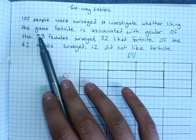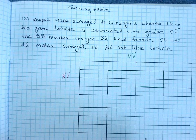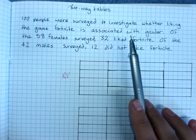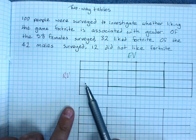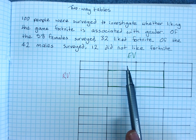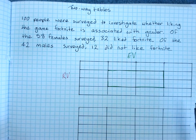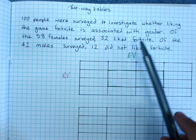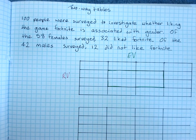Is liking the game Fortnite associated with gender? So remember we've got to work out which one's our response variable. If we say males are more likely to like Fortnite, then our response variable is like and dislike and our explanatory variable is gender. The other way around it doesn't work so well. Fortnite players are more likely to be male. Yes, we could possibly go either way. Gender is usually going to be your explanatory variable because we're looking to see if gender has an effect.